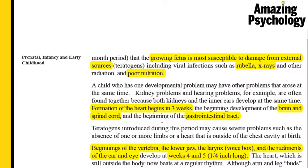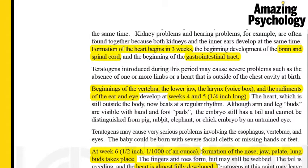Around the third week, formation of the heart begins, the brain and spinal cord slowly start forming, and the beginnings of the gastrointestinal tract can also be seen. In the fourth and fifth week, the embryo reaches about a quarter of an inch long, and this is when the vertebra starts to develop, the lower jaw develops, the larynx or voice box develops, and the basics of the eye and ear start developing. Any teratogenic or environmental influence at this time can cause defects in the vertebra, lower jaw, larynx, or all of these structures.